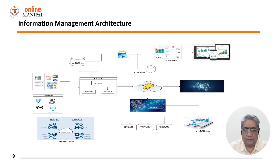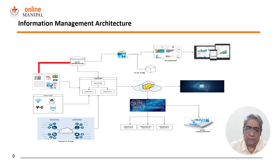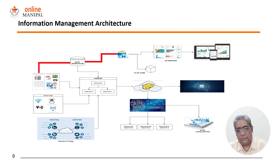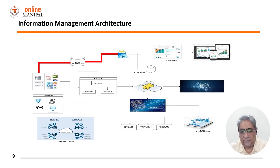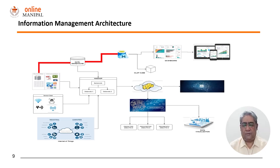Here is an example of a holistic information management architecture which can combine data from your data warehouse to the data in Hadoop data lakes. On the left we have structured data that can be stored in a data warehouse, and then from the data warehouse, data can be aggregated and put up on data marts on the cloud.